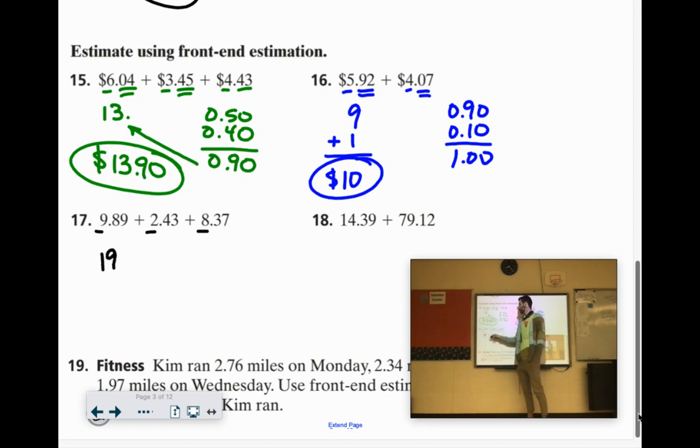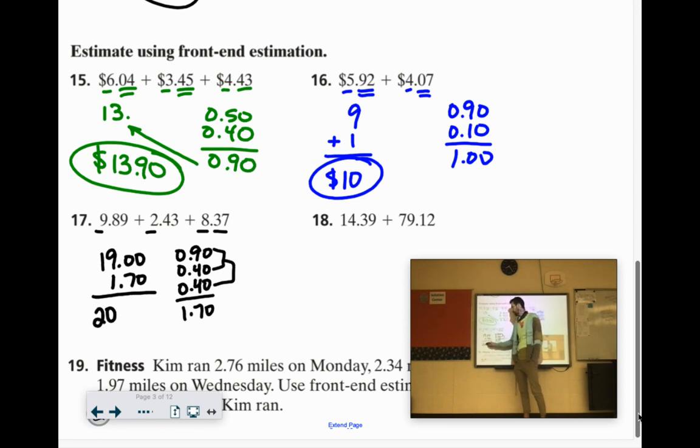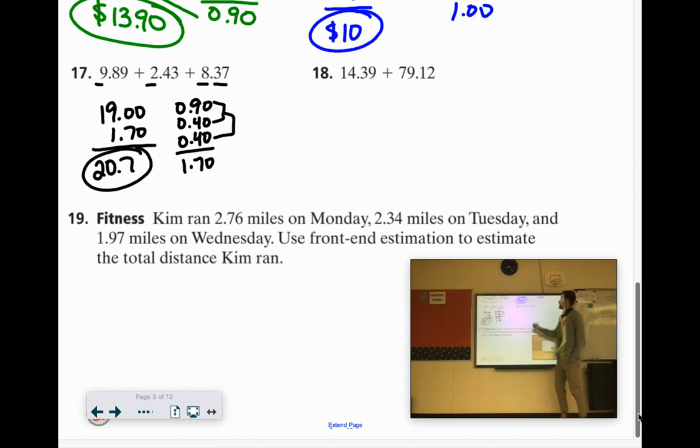9.89, 2.43, 8.37. 9 plus 2 is 11 plus 8 is 19. Let's see, 0.89 we'll call 0.90, 0.43 we'll call 0.4, and 0.37 we'll call that 0.4. 90 cents plus 40 cents would be $1.30 plus 40 cents more would be $1.70. And I know this isn't given in dollars but this will make an easy estimate. So 19 plus 1 would be 20.7. That's going to be my estimate. Let's see, 14 plus 79. If we add 10 it would be 89 plus 4 is 93. 0.39 let's call it 0.4, 0.12 let's call it 0.1, which would give us 0.5. So 93.5.